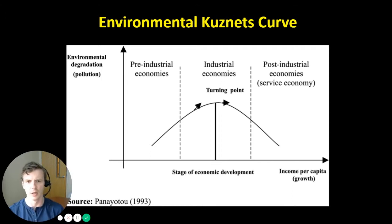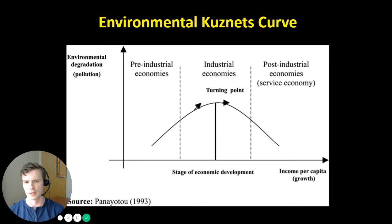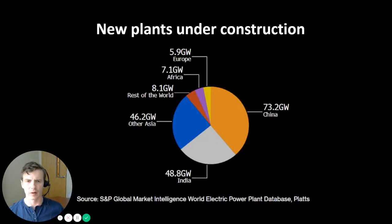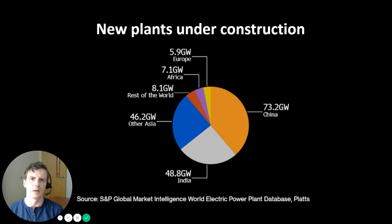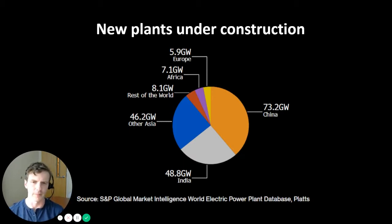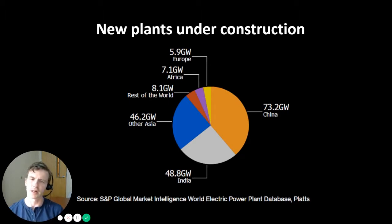If you are a pre-industrial economy, you gain wealth — you move to the right as a function of moving up — which means that your economic development comes directly at the expense of the environment. When we think about the current reliance or expected future reliance on fossil fuels in the electric power industry, this figure shows where countries in the world are planning to build coal-fired power plants. Even though the movement in the United States and Western Europe has been away from coal, that is not consistent with what's been happening in China, India, and other parts of Asia.